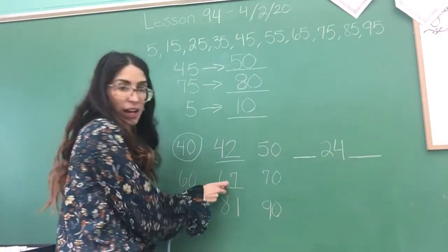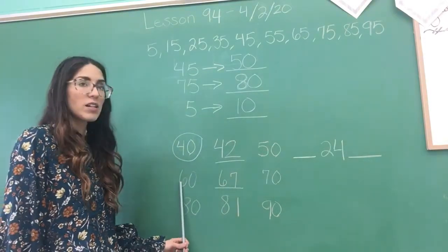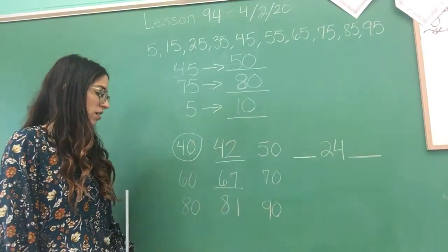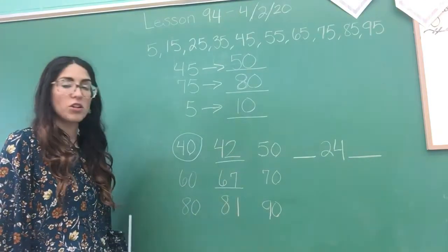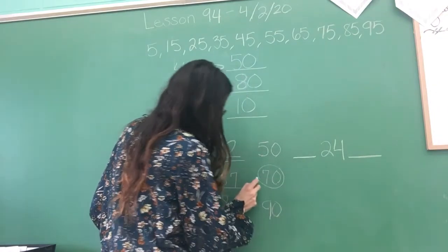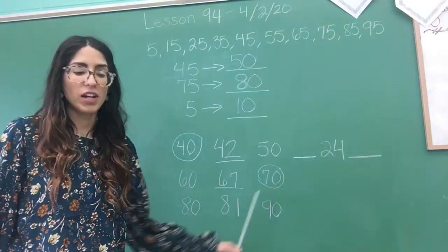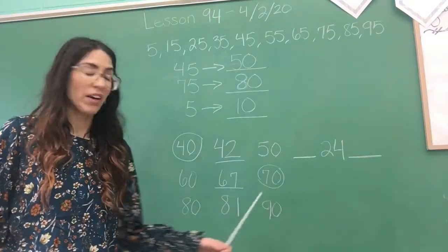Now we have 67. 67 going to be rounded to 60 or to 70? Which one is it going to be? Which one is it closest to? That's right. Very good. 70. 67 is going to be rounded to 70. It's closer to 70. Excellent job.